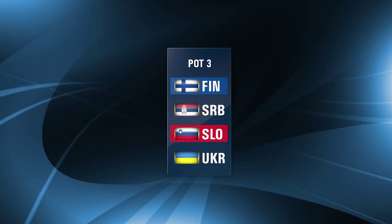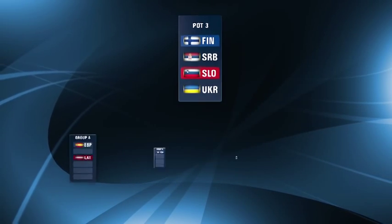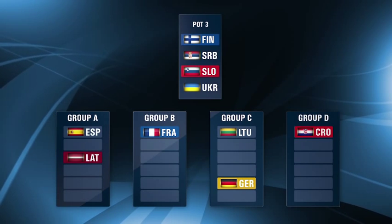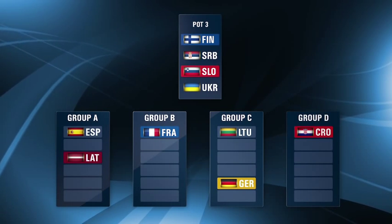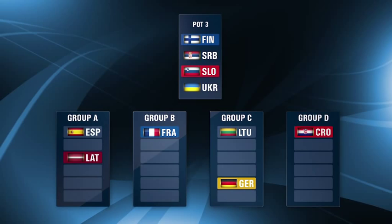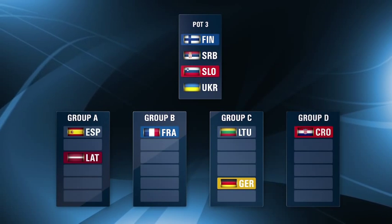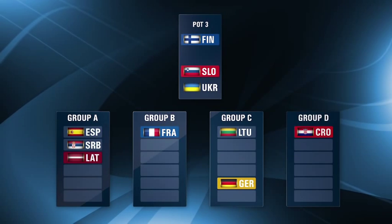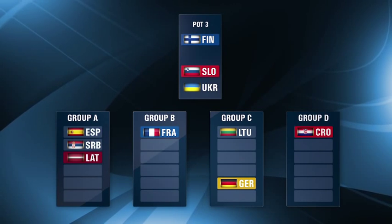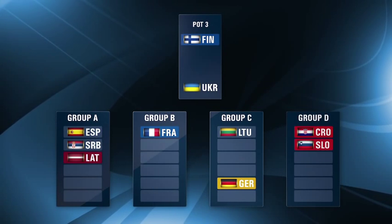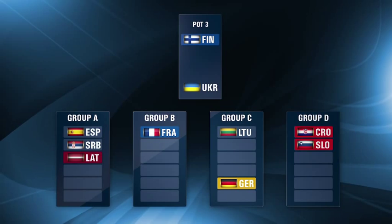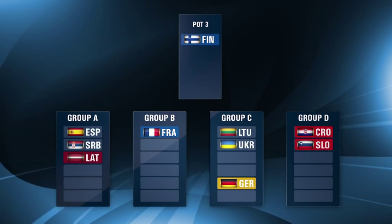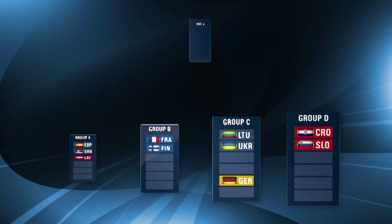For Pot 3, the teams will be drawn as normal. However, as partner countries, when Finland is drawn they will go to the group with France, and when Slovenia is drawn they will go to the group with Croatia. For example, Serbia is selected first and goes to Group A. Slovenia is drawn and as Croatia's partner country goes to Group D. Ukraine is drawn next and goes to Group C, as Finland, who is the partner country to France, has to go to Group B.